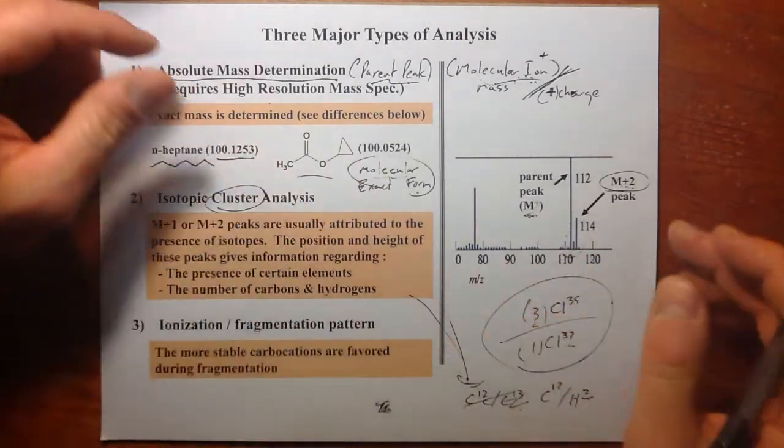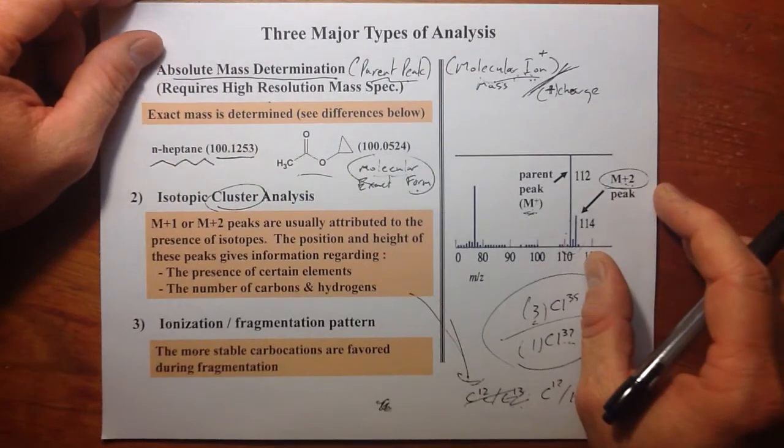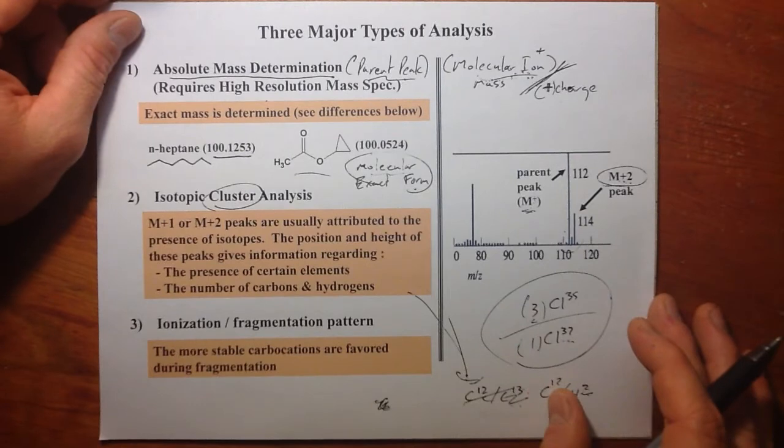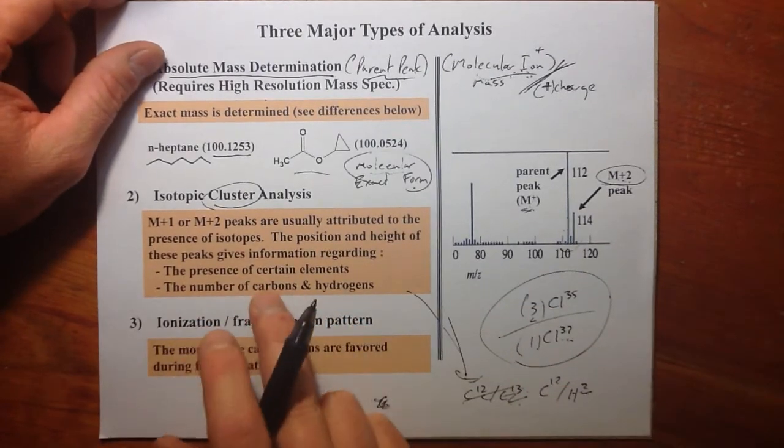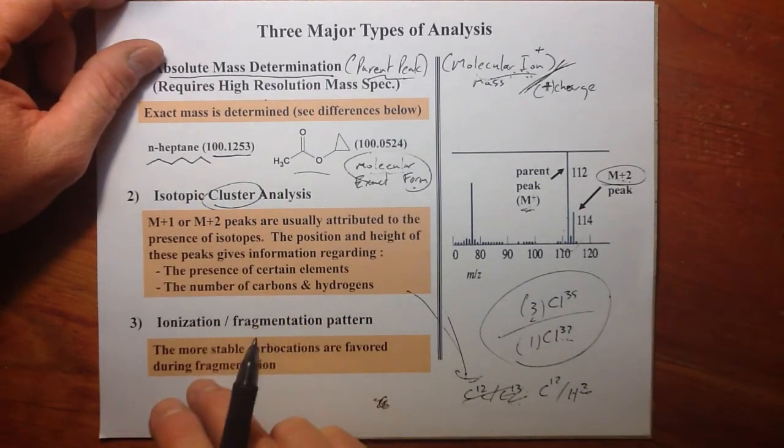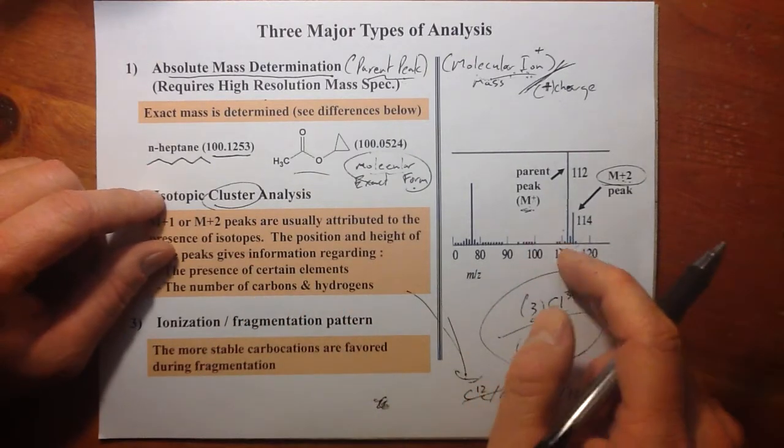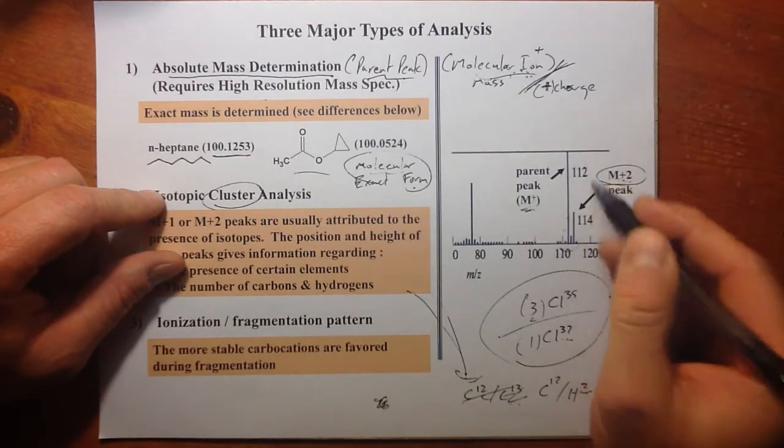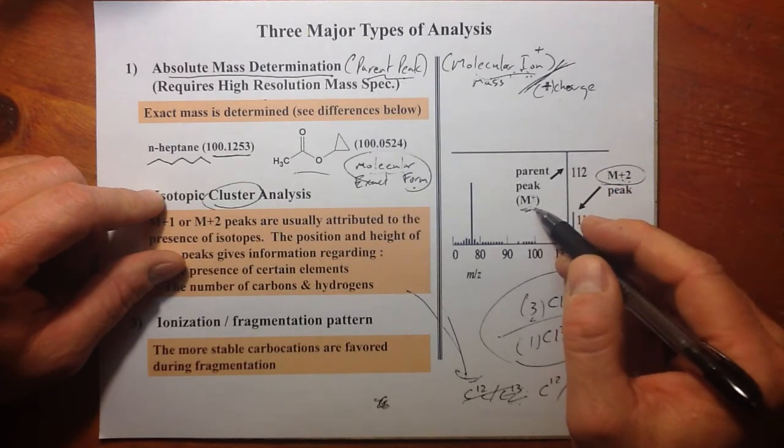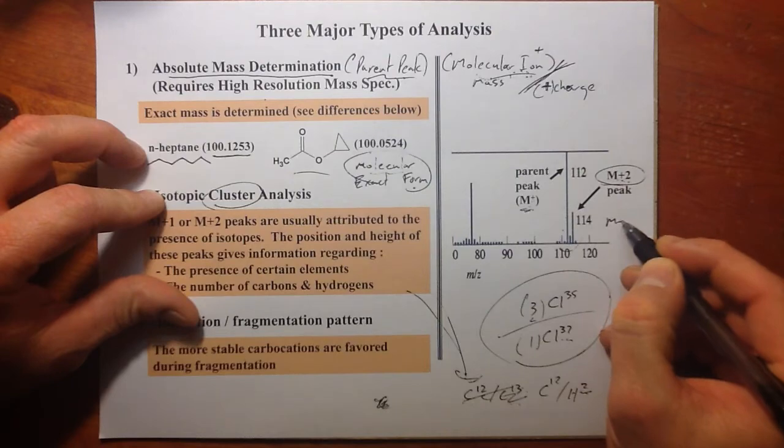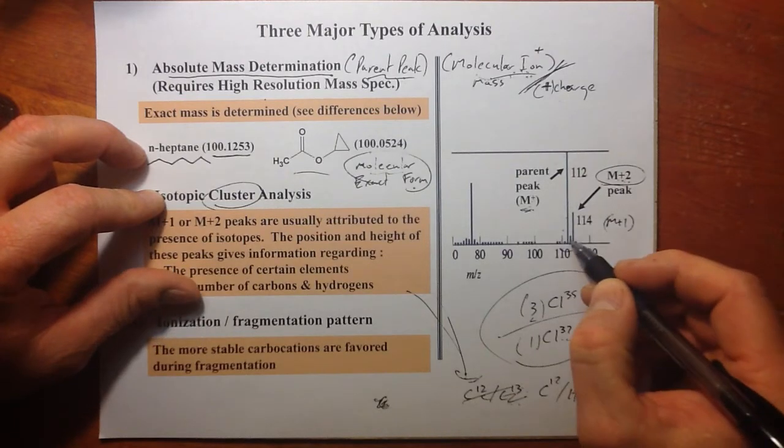It will sometimes tell us the number of carbons within the structure, or the presence of chlorines or bromines or things like that. So I'm not going to say a lot about this. Your textbooks may talk about this a little bit more. But we can do some what is called isotopic cluster analysis, looking at M plus peaks, M plus 2 peaks, or we could have even looked at the M plus 1 peak.